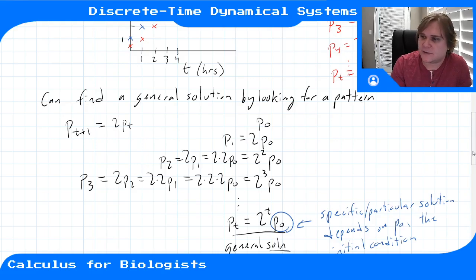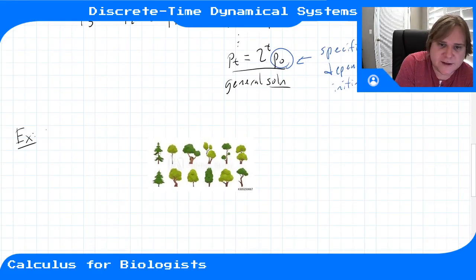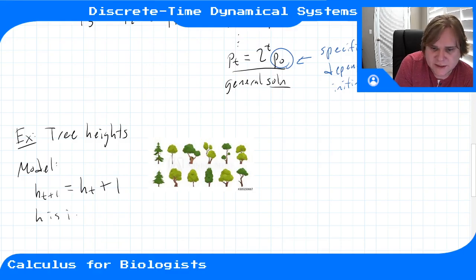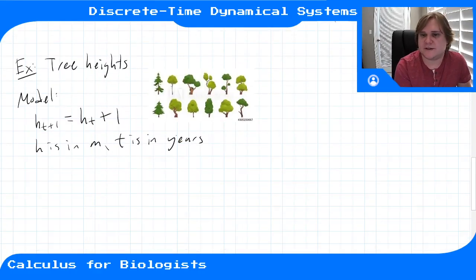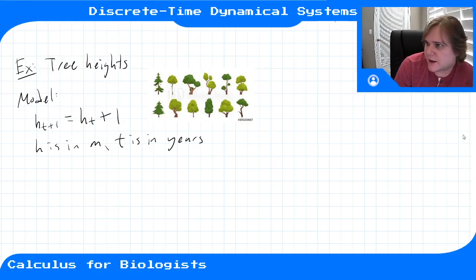Let's go back to the discrete time dynamical system that describes tree heights. Our model says the tree height one year later is the tree height this year plus one meter: h(t+1) = h(t) + 1, where h is in meters and t is in years. Every discrete time dynamical system has input units and state variable units — here, time units are years and state units are meters.